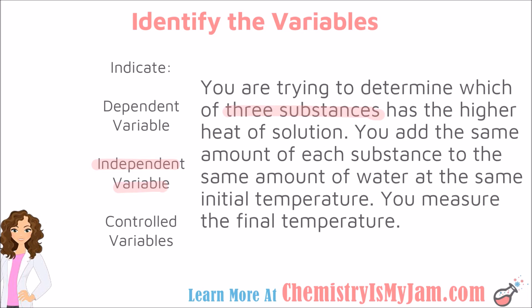What responds to that? What is our dependent variable in this case? Our dependent variable is what we are going to measure — that's the final temperature. And then finally, what are our controlled variables? Our controlled variables are the same amount of each substance, the same amount of water, and the same initial temperature. All of those things were kept the same so that when we measured our final temperature, we know that the differences that we saw were only due to the substance that we started with.